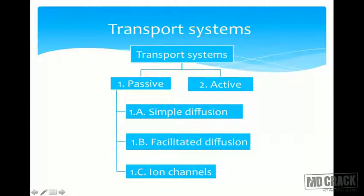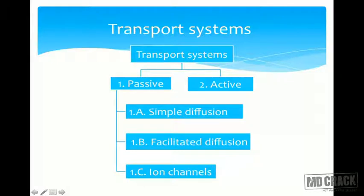As you can see in this slide, transport systems can be passive or active. Passive transport does not require energy, while active transport requires energy. Passive transport is further divided into three types: simple diffusion, facilitated diffusion, and ion channels. I'll be talking about each of these separately.